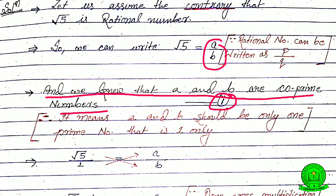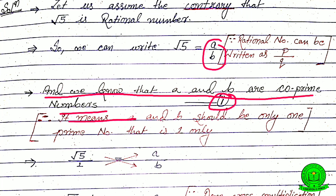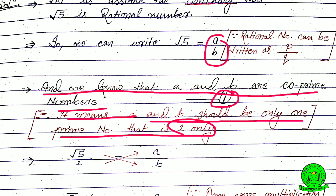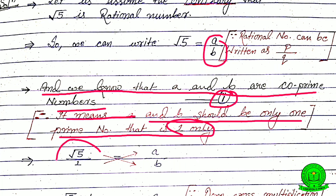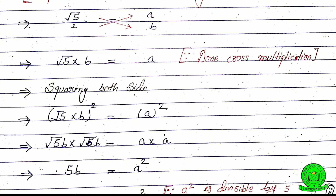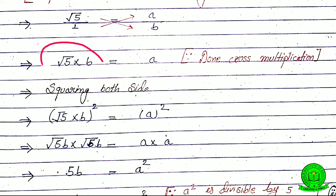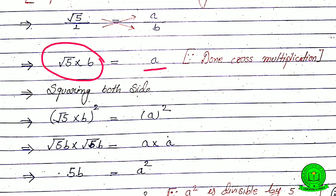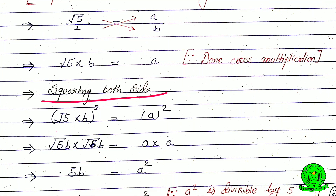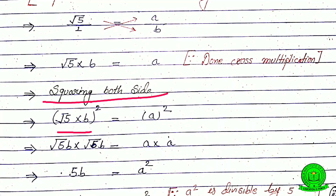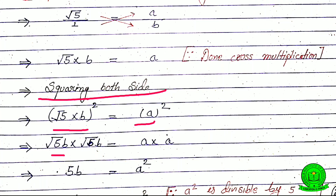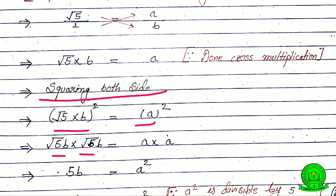A and b are co-prime, meaning their only common factor is 1. We take this as equation number one. So we write root 5 equals a by b, which gives root 5 times b equals a after cross multiplication. If we square both sides, then root 5 times b, whole squared, is equal to a squared.